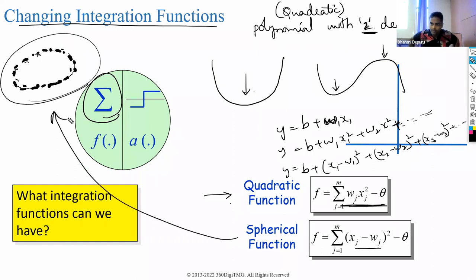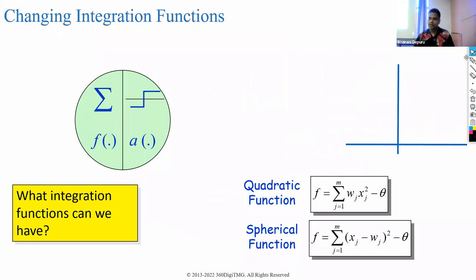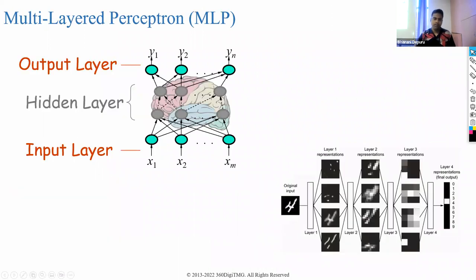With multiple input variables, you often cannot figure out what kind of pattern the underlying data follows. When you cannot identify the underlying pattern, it doesn't make sense to experiment with all these formulas individually. Instead, you can use a multi-layered perceptron, which has an input layer, hidden layers, and an output layer.